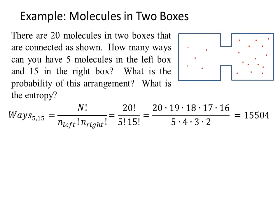So if we multiply those out and divide, we get 15,504 different ways, which may seem like a lot until you realize that the number of possible ways to arrange 20 molecules in these two boxes is 2 to the 20th. So there's quite a few different ways we could arrange these molecules. The probability becomes this ways divided by 2 to the 20th, which is 15,504 divided by 1,048,576. So the probability of having this is on the order of one and a half percent. Not too likely.